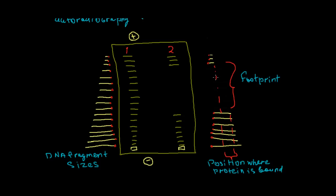Here on the right I can show you the same molecules but different sizes, and we are missing certain sizes here. It's called footprint. This is a position where protein is bound. And this is about how we can locate with this footprinting experiment with DNase I the exact location to which protein binds.